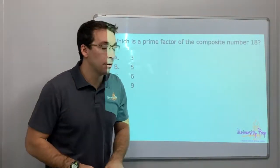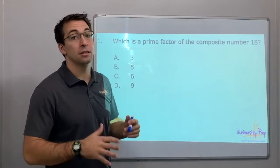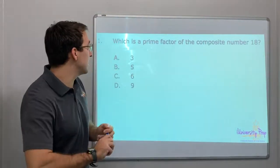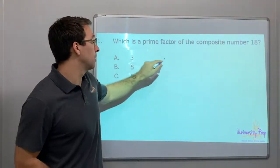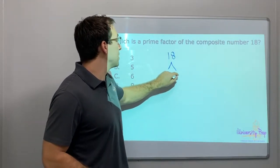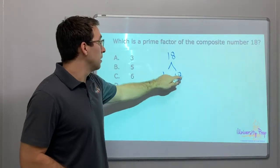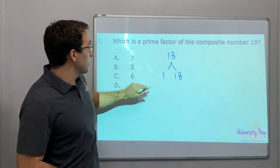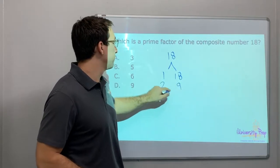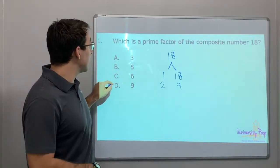What is a prime factor? Remember, factors are multiplied together to create the product. What is a prime factor of the composite number 18? So 18 equals 1 times 18 — those are not options — and 2 times 9.